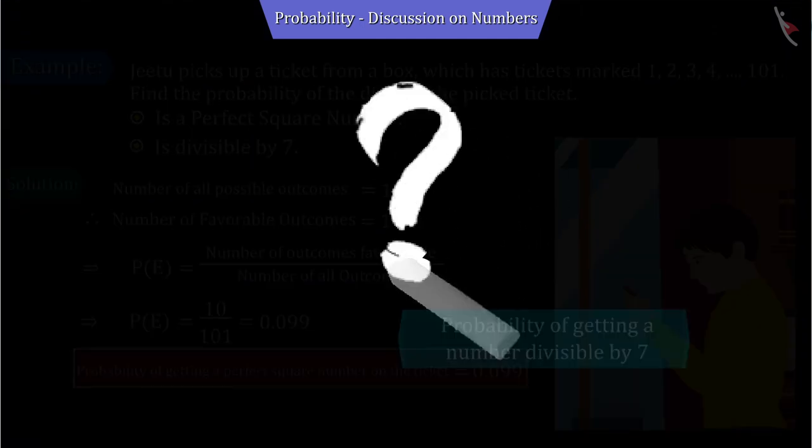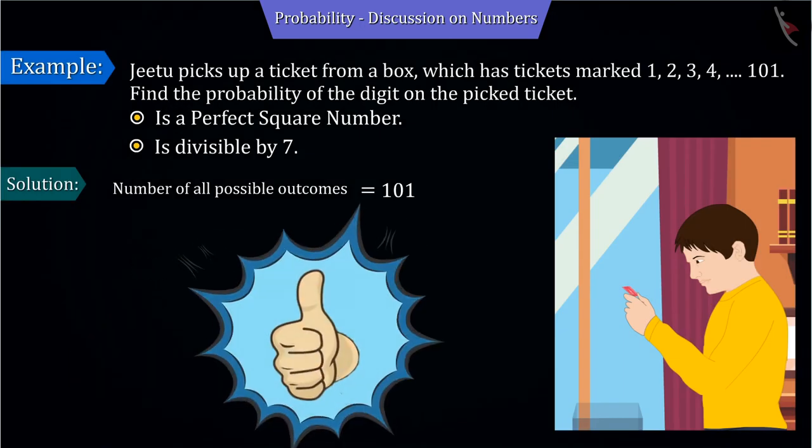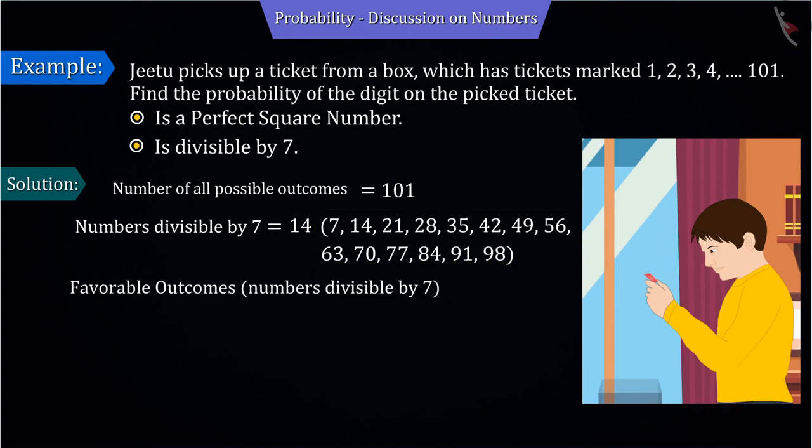Now, can you tell the probability of getting a number on the ticket which is divisible by 7? Correct answer. There are a total of 14 numbers in the given numbers which are divisible by 7. That is, the number of results favourable to the event is 14.